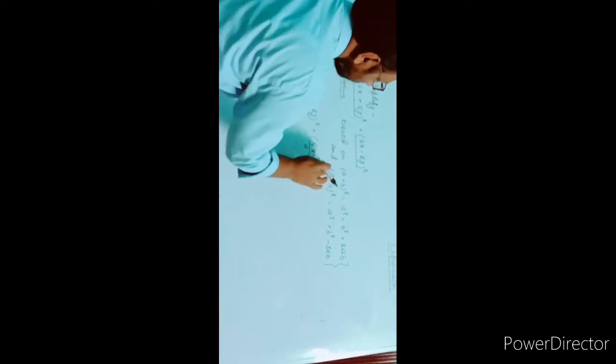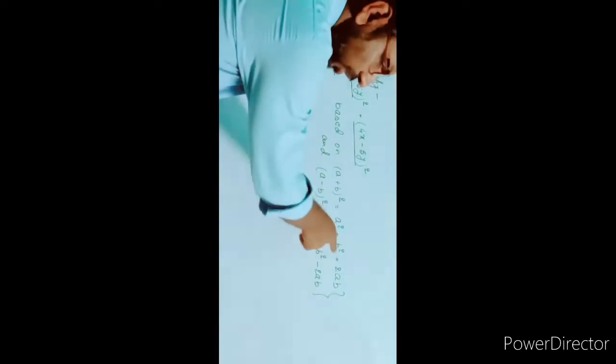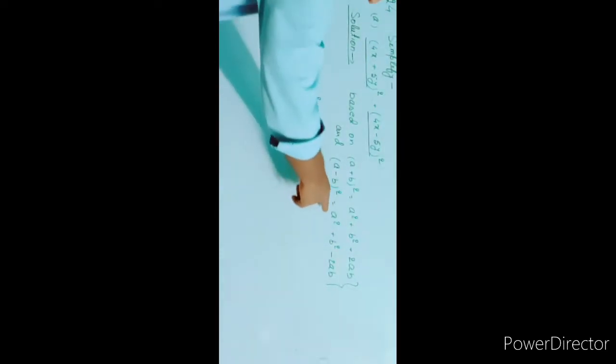I have written the base of the solution. For the first term I shall use (a + b)² and for the second term I shall use (a - b)². We know these two formulas: (a + b)² = a² + b² + 2ab, and (a - b)² = a² + b² - 2ab.